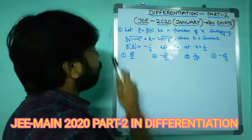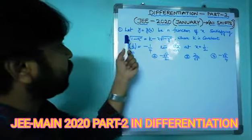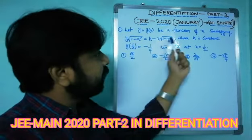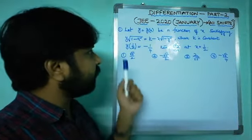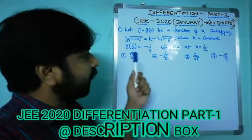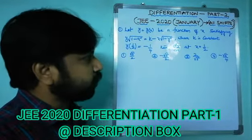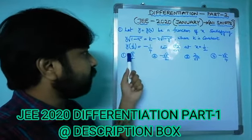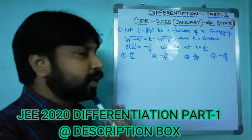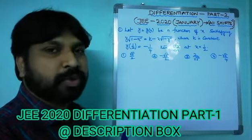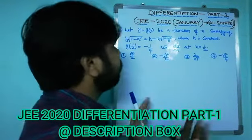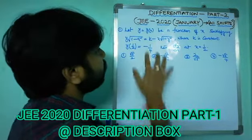The first question: let y = y(x) be a function of x satisfying y√(1-x²) = k - x√(1-y²), where k is a constant, and y(1/2) = -1/4. Find dy/dx at x = 1/2.